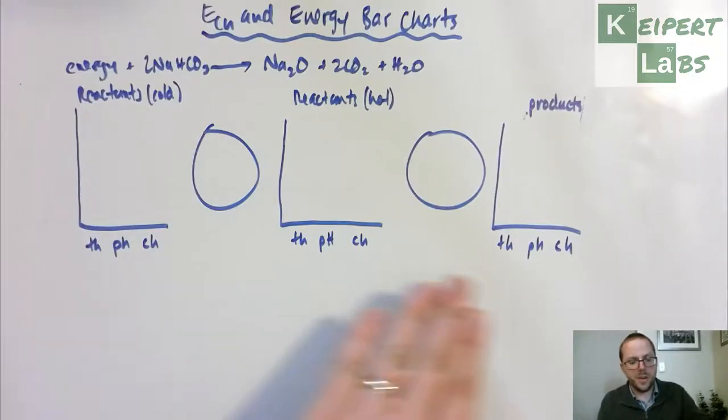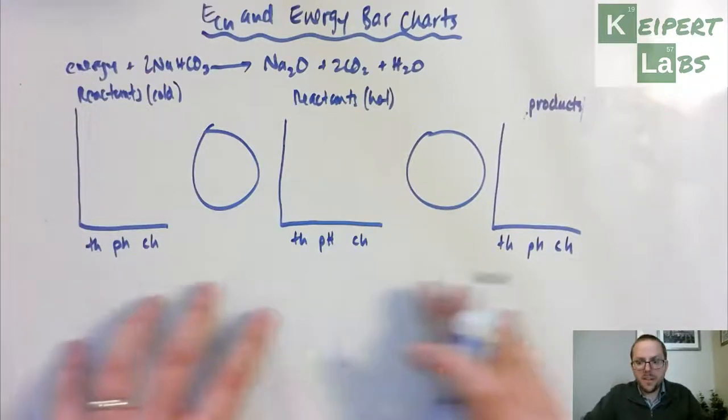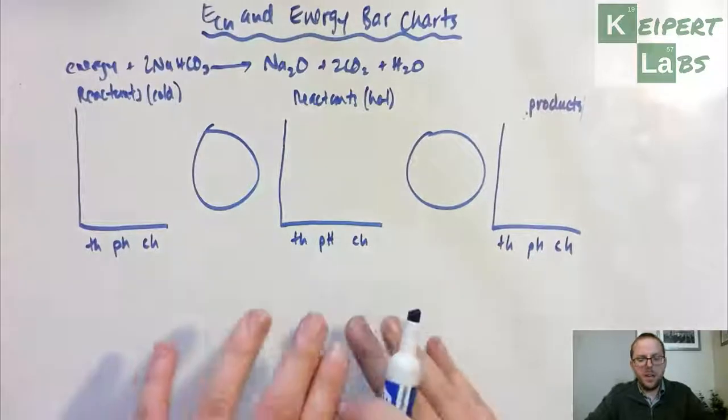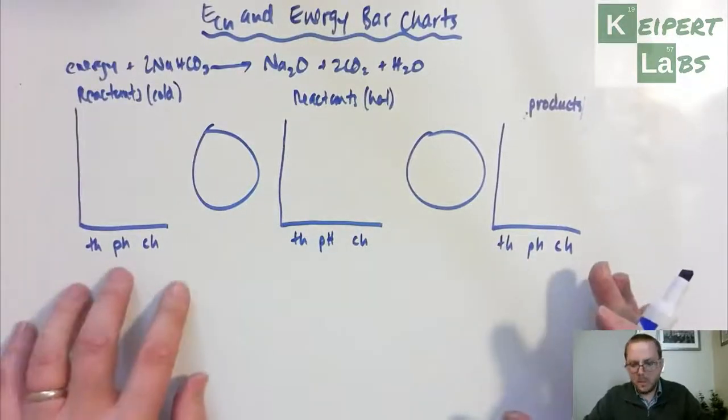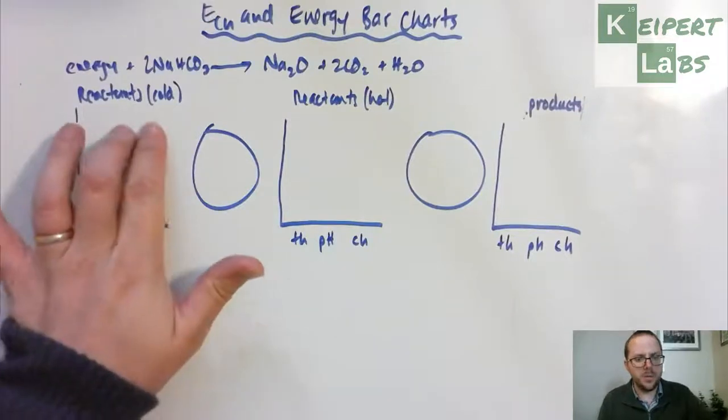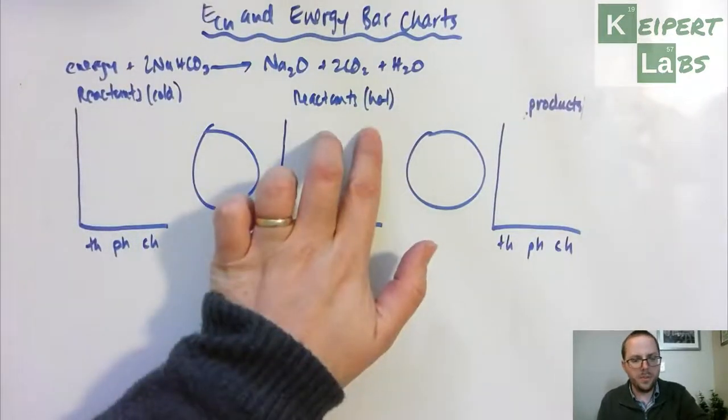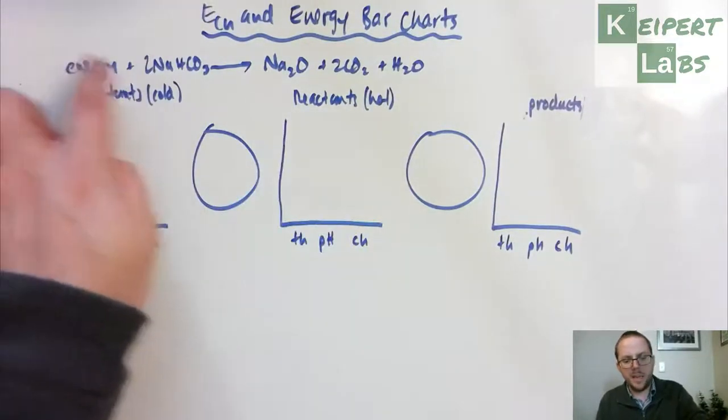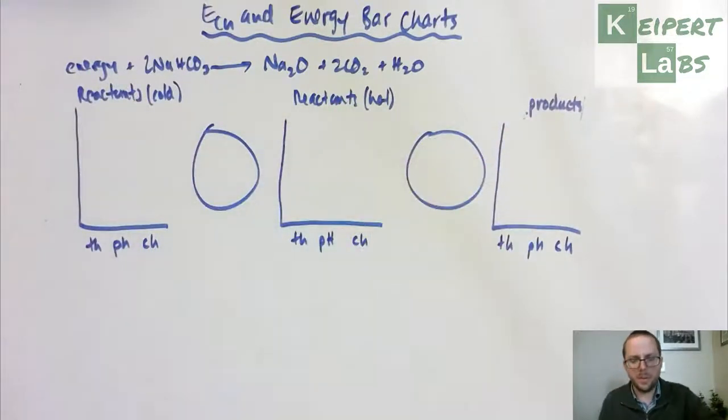And I've constructed this kind of two-part or connected energy bar chart diagram. And I've left a bit of space under here because I'm going to jot some notes as we're going about some things that we notice. So we've got reactants when they're cold, the reactants when they're hot, when we've heated them by adding energy in, and then going from here to form our products.